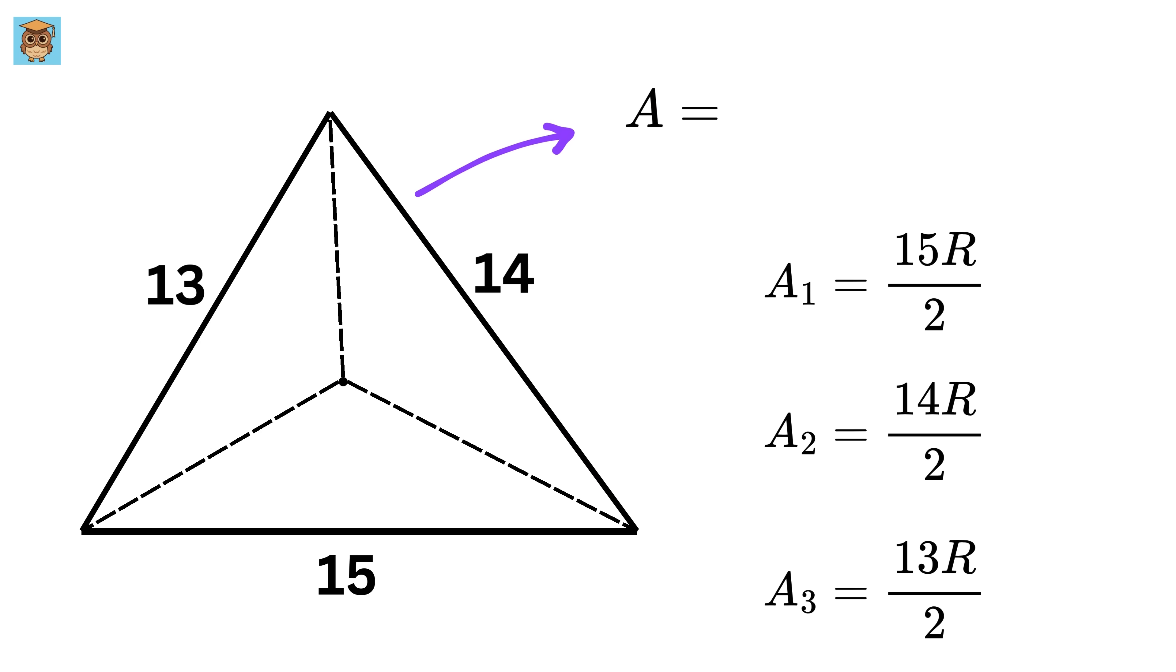Because now, tell me what will be the area of this original big triangle? It will be equal to the sum of all of these three triangles, right? So, the area of this big triangle will be equal to this, plus this, plus this, which will be equal to 42R over 2 or 21R.